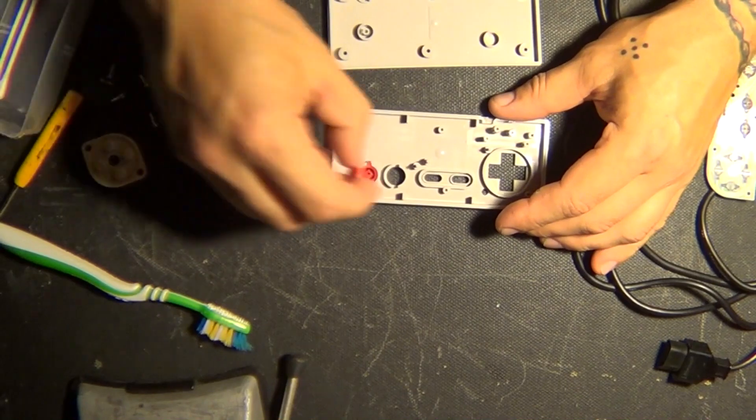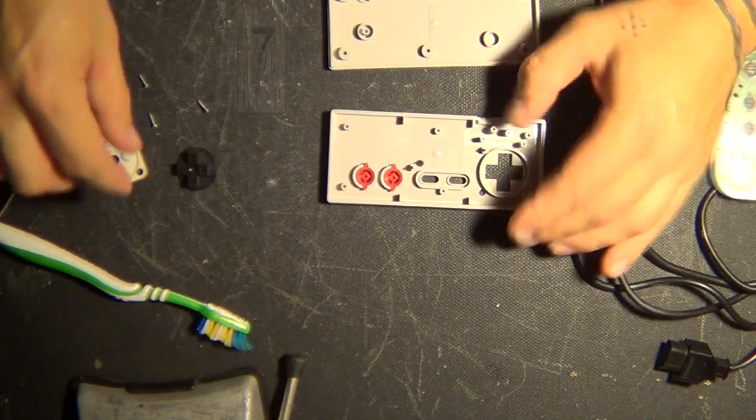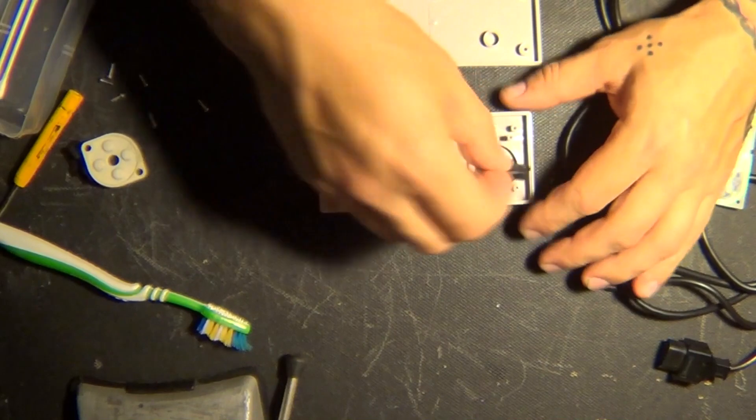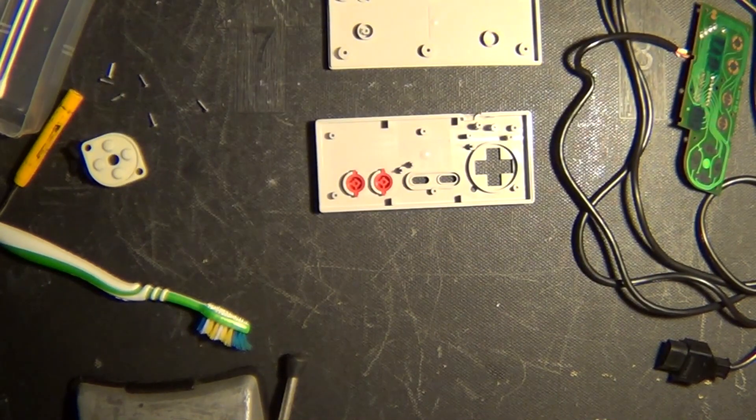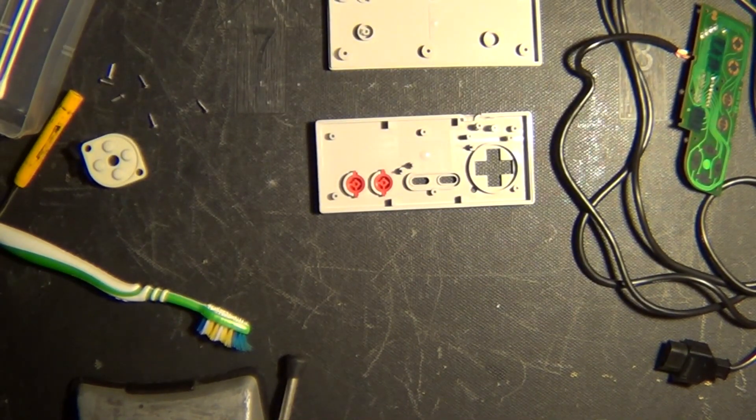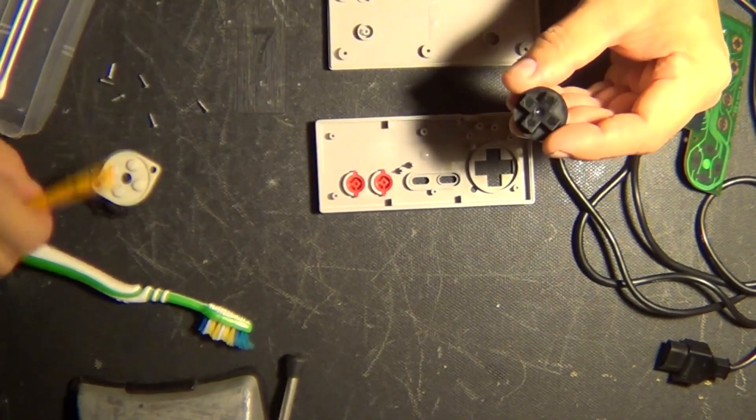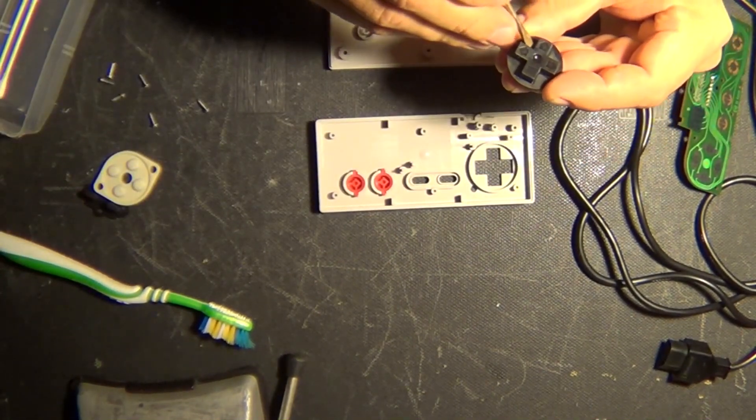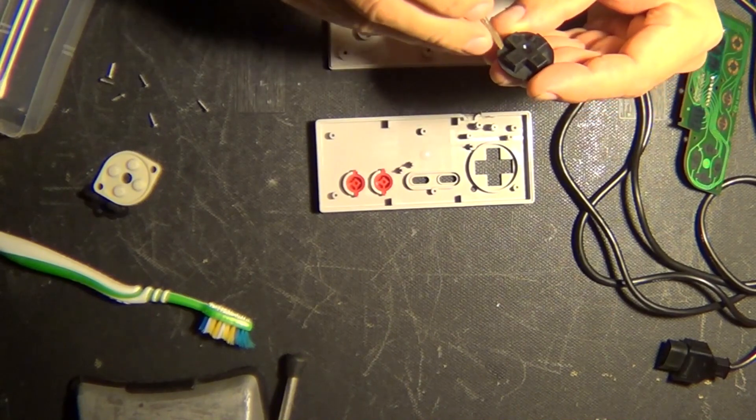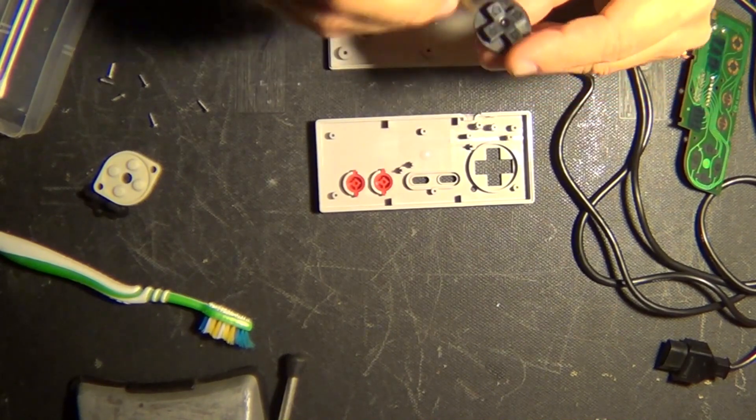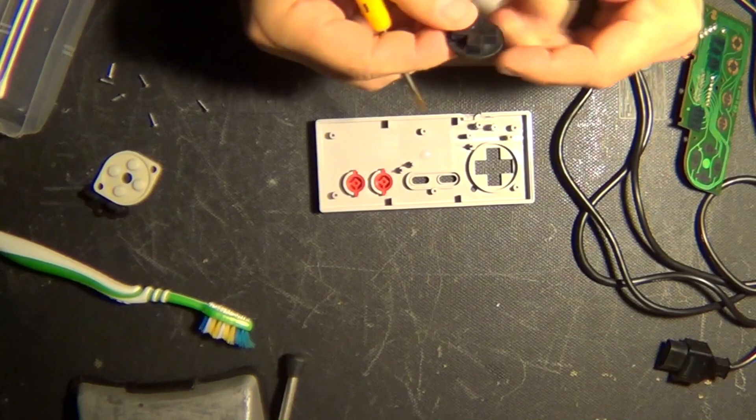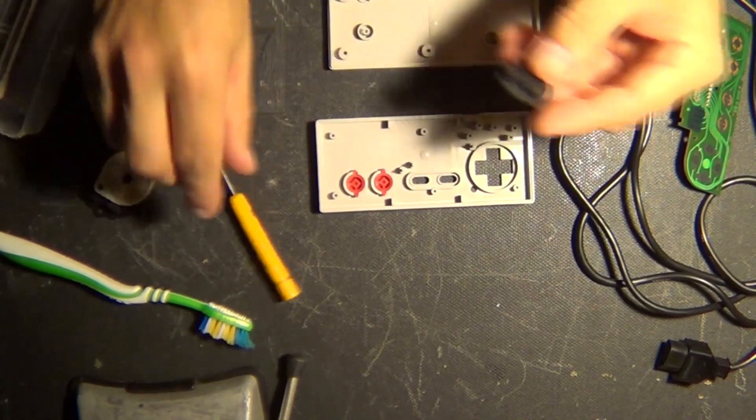So, buttons A and B. Directional pad. Actually, I've got a problem here. Hold on. Let me see. Get the debris stuck on the pad. Just took care of that. Sometimes that happens. That's a lot better.